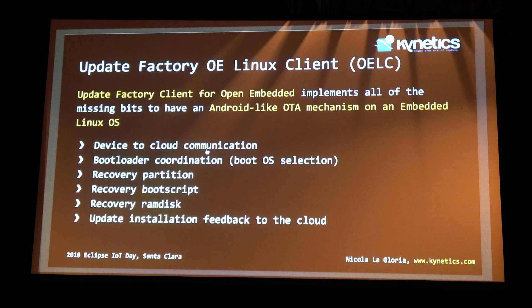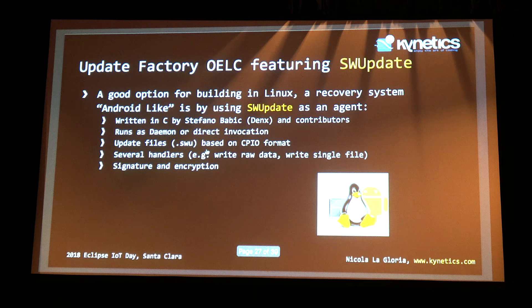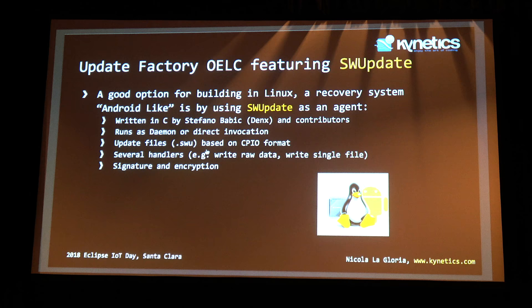Why can't we replicate the same smoothness of Android in a Linux-based embedded system? We want to replicate the Android-like OTA mechanism on OpenEmbedded, Yocto, Buildroot, or whatever distribution you're using. The basics: device-to-cloud communication via Hawkbit on the backend, bootloader coordination, a recovery partition, a recovery boot script, a recovery RAM disk, and feedback of the installation process back to the cloud. Our starting point is the SWUpdate open source project written in C by Stefano Babic, which implements a very Android-similar update file description to perform pre- and post-installation commands, based on CPIO format.